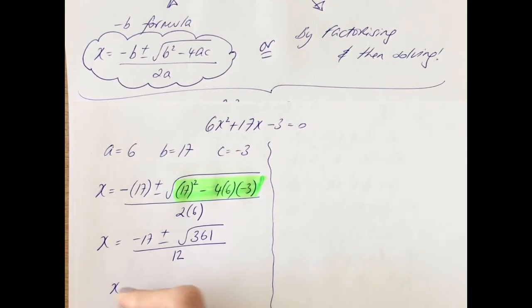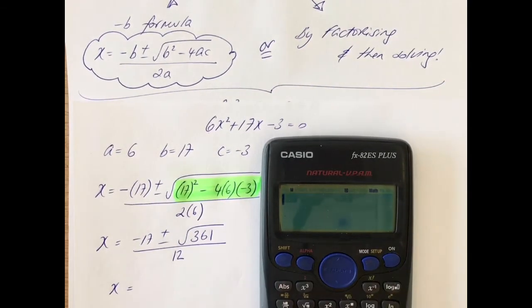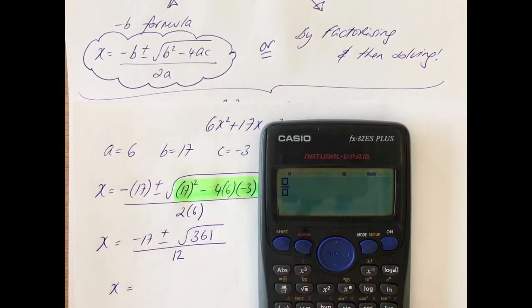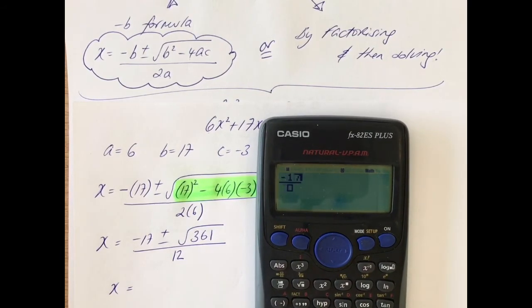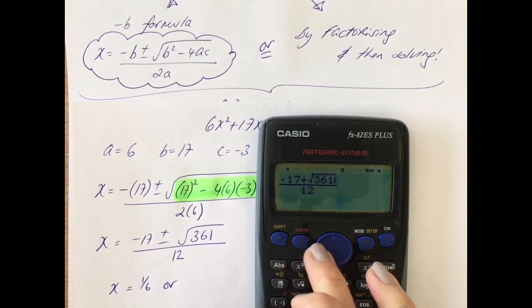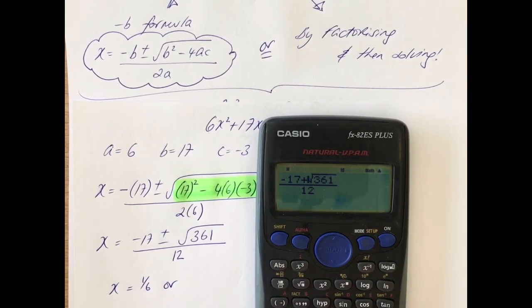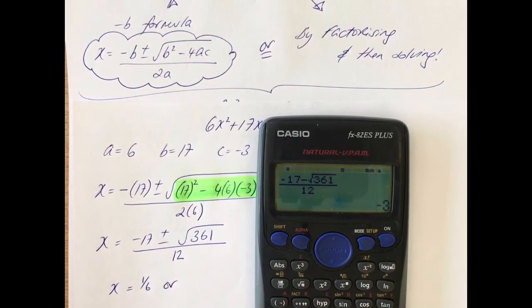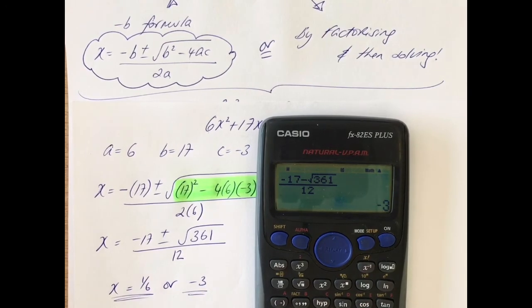So we have x equals — and now I'm going to do this on the calculator. Open up the fraction button, minus 17 plus first, square root 361, and on the bottom 12 — equals 1 sixth. Or, I'm going to go back here using my arrow key, delete that plus, put in the minus — minus 3 is the answer. So there are my two solutions.